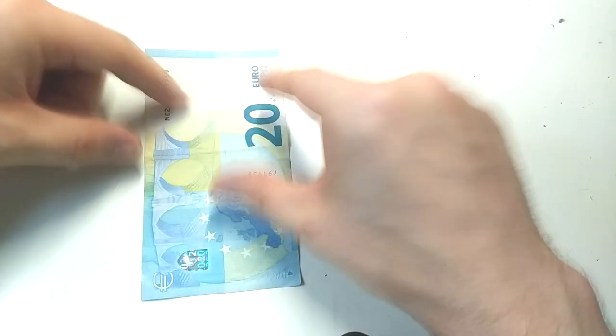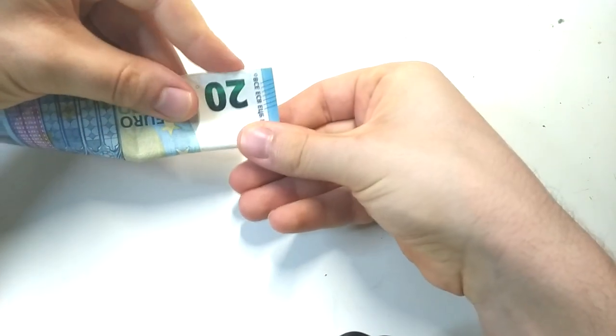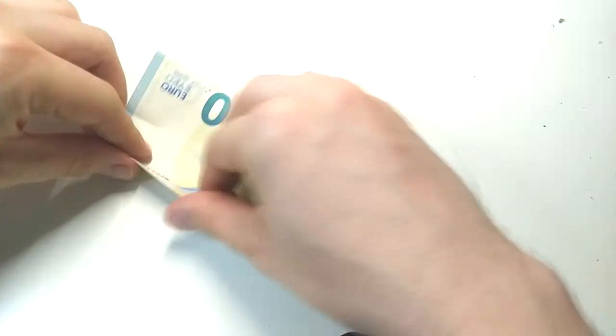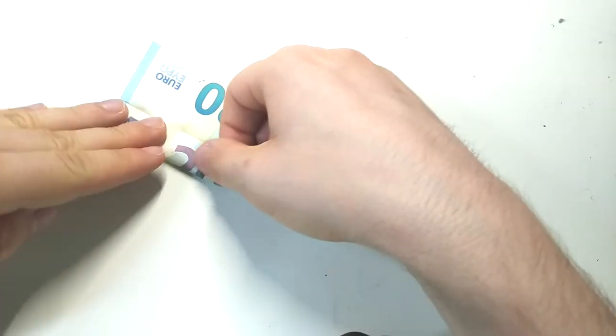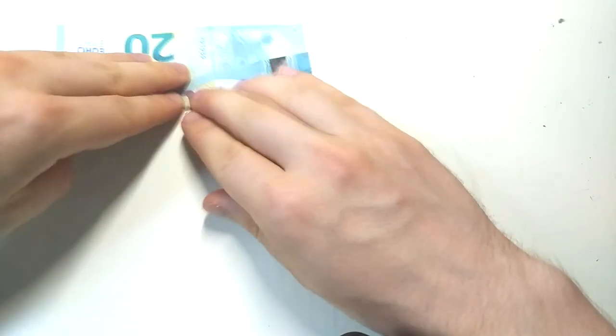What you need to do first is fold the whole thing in half along the long edge of the bill. The paper will be pretty crisp, so make sure to make a nice pinch mark in the middle.